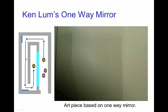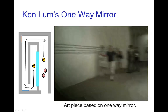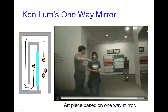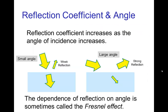He walks back out, goes down the hallway, and returns to where we started — and we can see that what we thought was a mirror is actually a piece of glass. Now, another effect on the reflection coefficient is the angle. When the angle is small and light is coming almost head-on, we tend to have a weaker reflection. When the angle is large — the light hitting at a glancing angle to the surface — we tend to have a strong reflection. This dependence of the reflection coefficient on angle is called the Fresnel effect, from the Fresnel equations of optics.